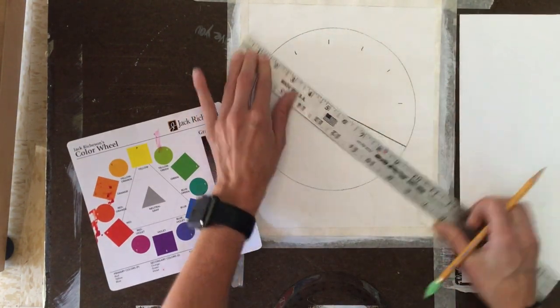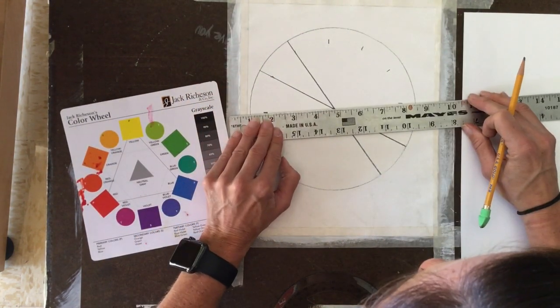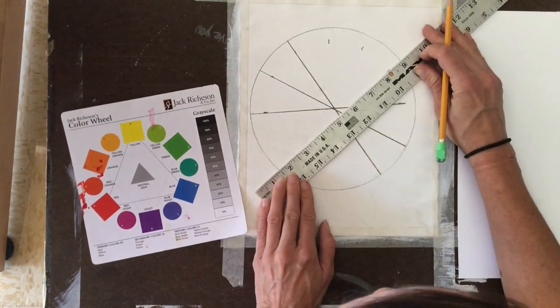Once I have my sections measured out, I'm going to use my ruler to create straight lines and section the circle into those 12 sections.